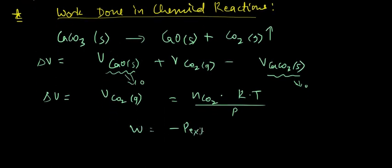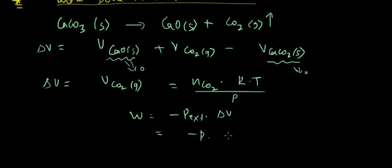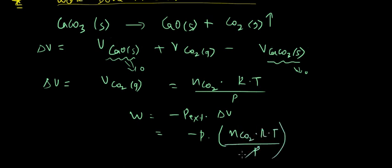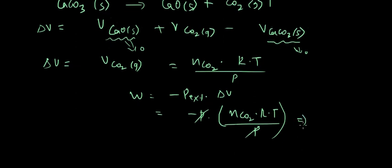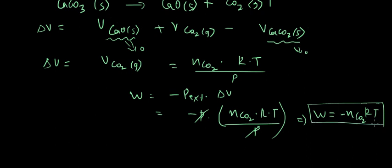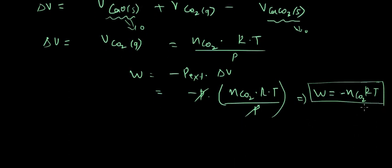Work done equals minus P_external times ΔV, which equals minus P times n_CO2 times RT divided by P. Since P cancels, the final result is W equals minus n_CO2 RT. With this we come to the end of this lecture. In the next lecture we will continue with more on the calculation of work done. Good luck and goodbye.